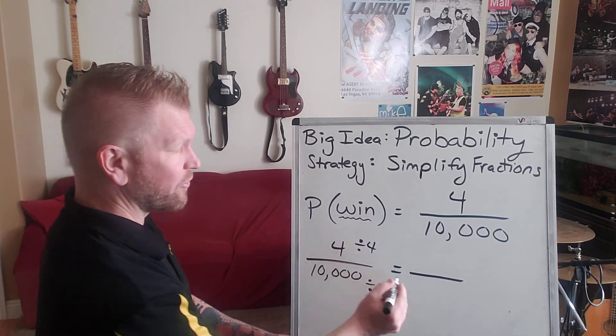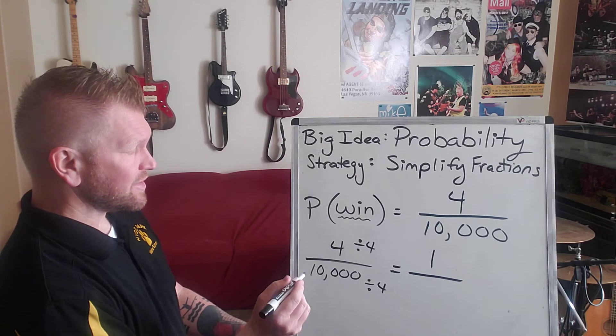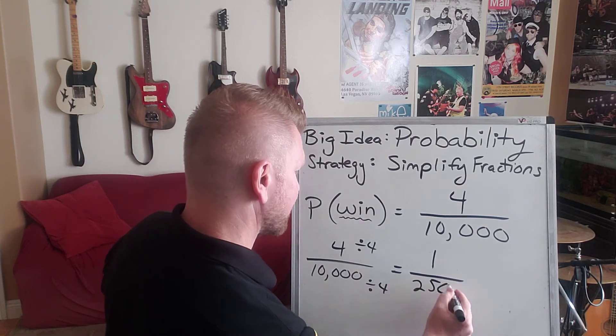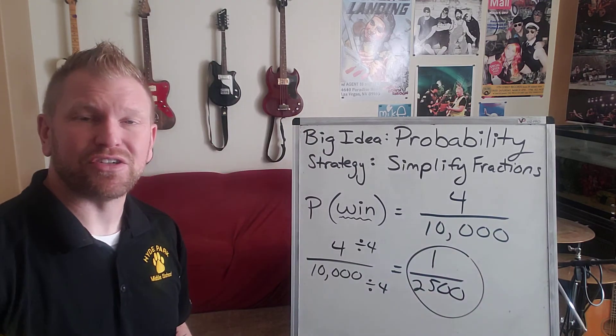So now, four divided by four is one. And 10,000 divided by four is 2,500, and it takes you right to the final answer.